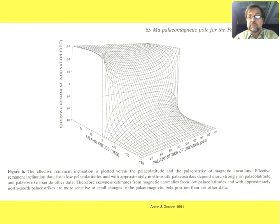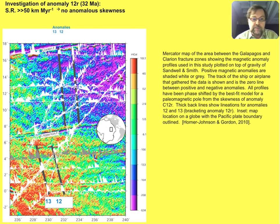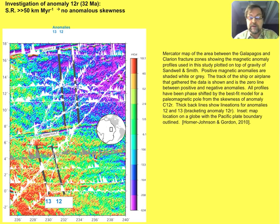A more recent result obtained a pole for anomaly 12R, about 32 million years ago. This is the location map: we're in the equatorial Pacific in this little box. Here's anomaly 12, anomaly 13, offset at the Clipperton fracture zone, and these are all the data available — both shipboard and aeromagnetic data. They provide very strong constraints on where the paleoequator is, and it looks like the paleoequator is roughly near the Clipperton fracture zone.